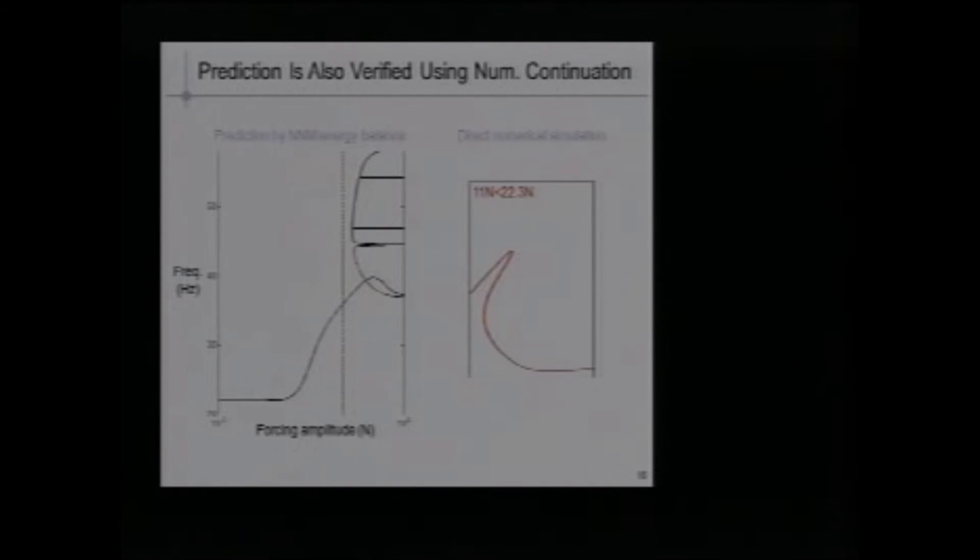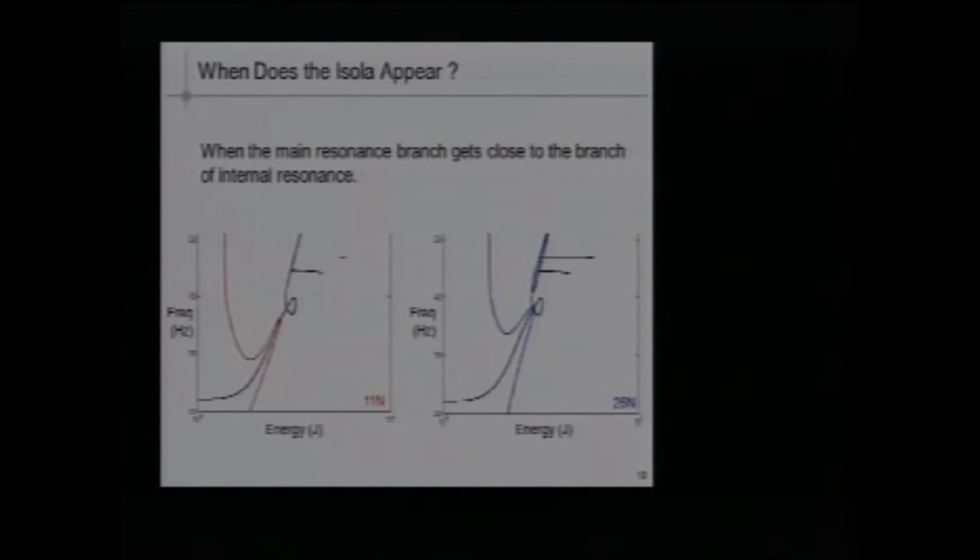We can also do direct numerical continuation to verify these findings. Here we see we have only one solution. Here we calculate the corresponding frequency response. We have clearly only one resonance here. But if we go beyond the creation of the isola, we can compute this isolated branch at 26 Newton, which is greater than the prediction. Then we can continue. Then the isola will merge with the main branch, forming one very important resonance peak.